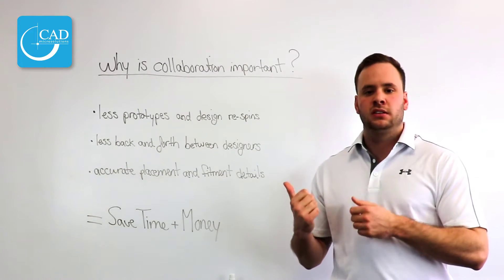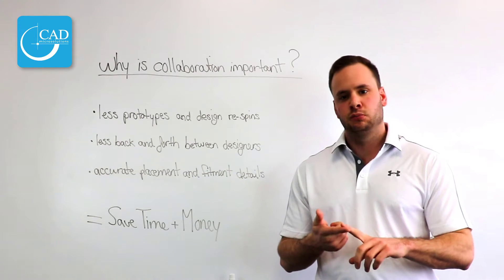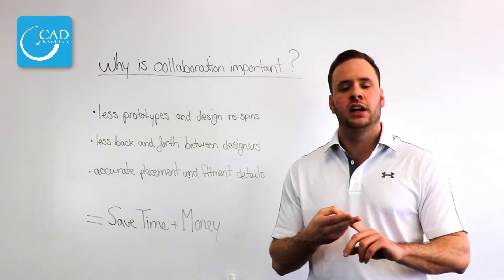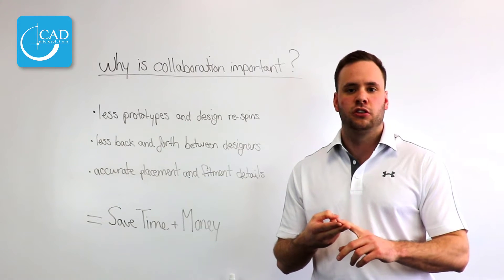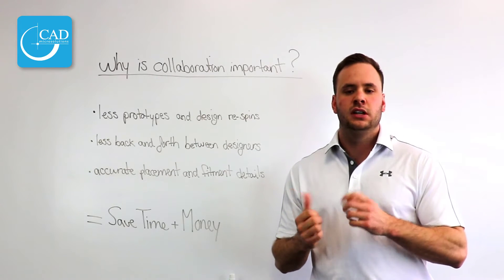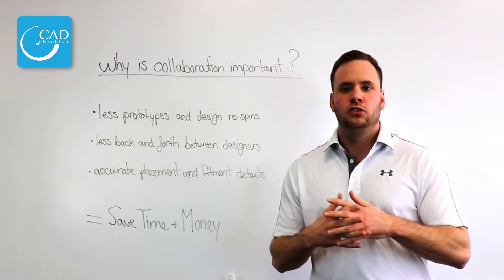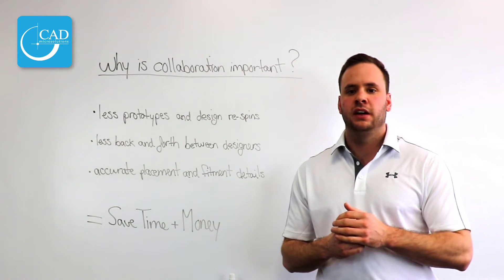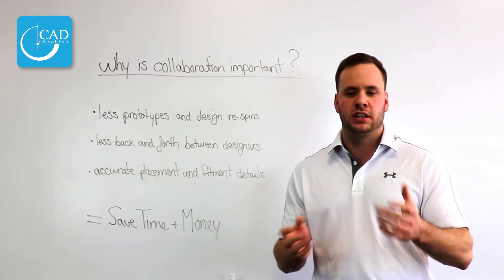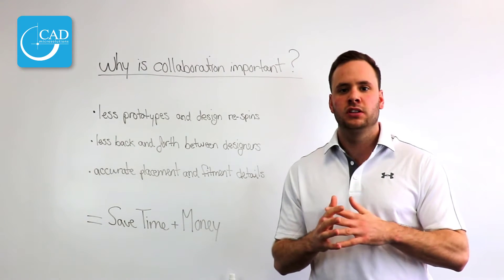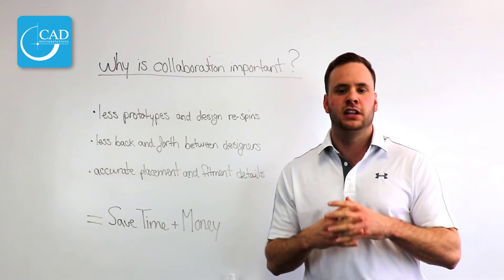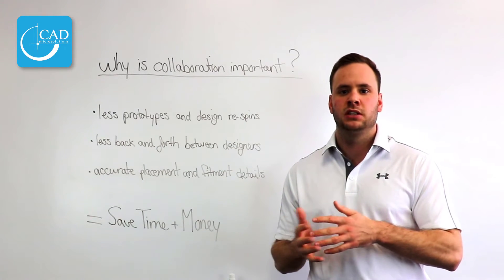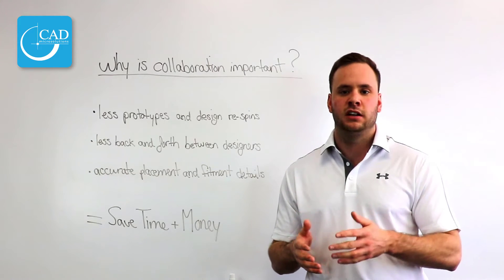So why is collaboration important? This is going to give us fewer prototypes and fewer design re-spins. It ensures that we can fit our board into the enclosure with no component height clearance issues. Secondly, we have less back and forth between the designers — it's very difficult to communicate through email to make these changes, so we let the tool and the commenting sections within the tool help us with that. On top of this, we have accurate placement and fitment of the board within the enclosure, ensuring none of those electrical components are hitting the side of the enclosure. Ultimately, we're saving time and money by not doing prototype or design re-spins, or waiting on a designer to make changes.